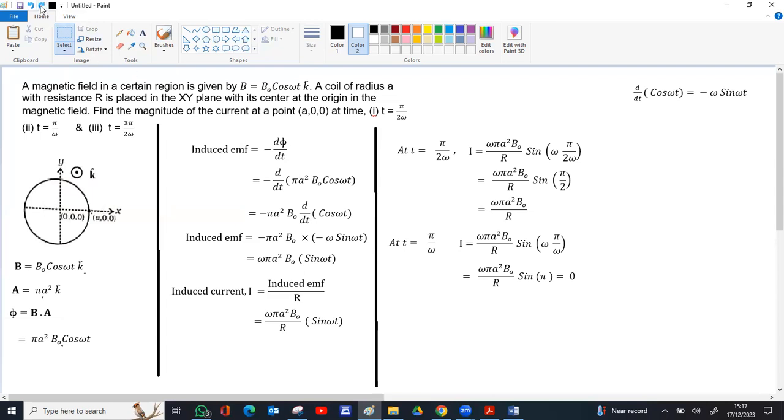Now the third case, t is 3π by 2ω. Substitute t as 3π by 2ω. The beginning part remains same, sin ω into t will be 3π by 2ω. Ω ω will go, 3π by 2. Sin 3π by 2. Sin 0 is 0, sin 90 is 1, sin π is 0. Sin 3π by 2 is again minus 1. Minus 1 into this will be negative of this. Means current flow in the opposite direction.